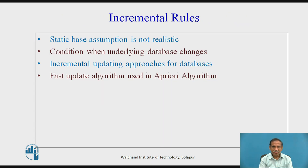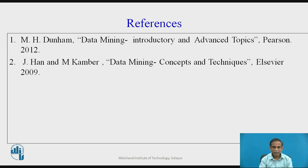We may use incremental rules, which help us use already-processed data based on a static assumption. However, this is not realistic when the underlying database changes. Incremental update approaches can be used for databases where fast update algorithms can be applied within the Apriori algorithm to generate better rules.